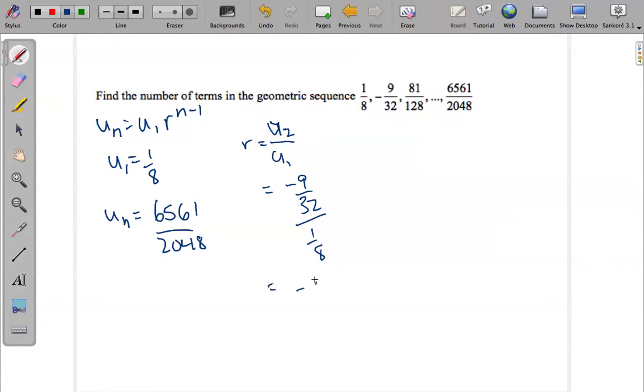Do a little fraction work here. 9/32 × 8/1 ends up getting me a value of -9/4. And this is my r value. So I know r = -9/4.